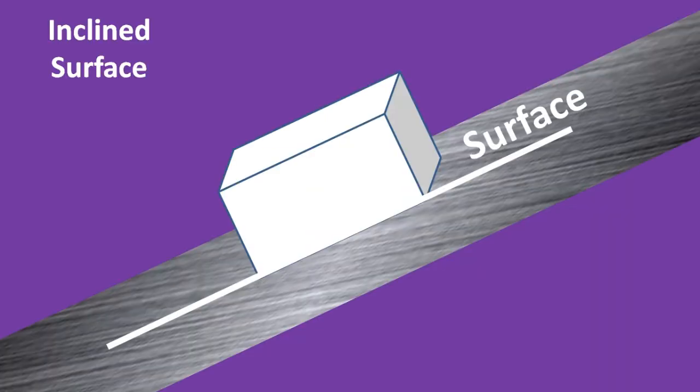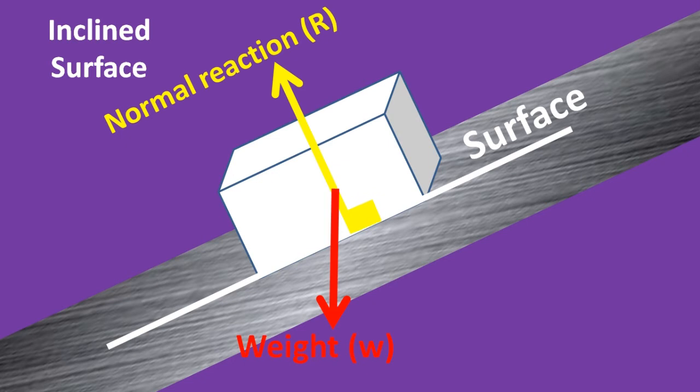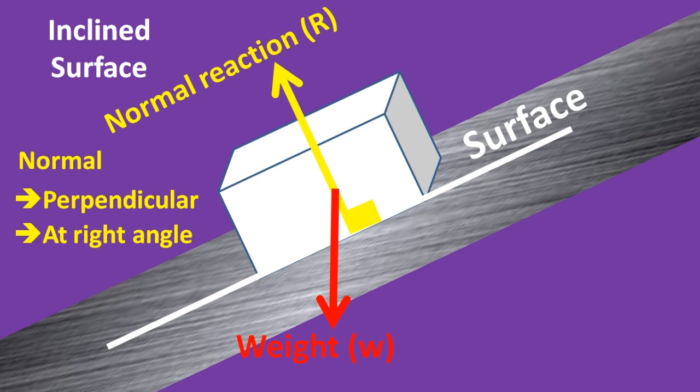Yes, but if the surface is inclined like in this other case, then the weight is no longer perpendicular to the surface. This is why it is called normal, meaning perpendicular or at right angle.